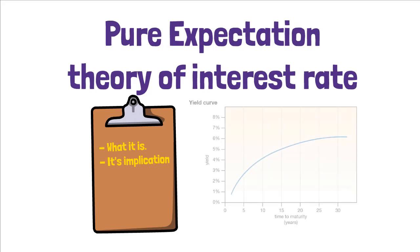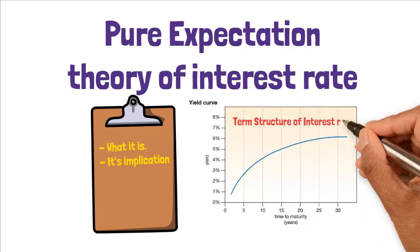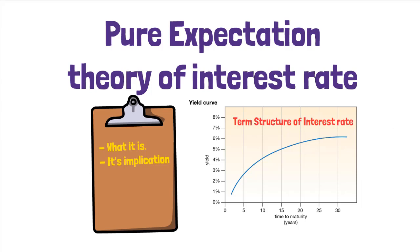To understand the pure expectation theory, we focus on the term structure of interest rates first. This is simply the relationship between bond yields and maturities. This relationship is illustrated in a yield curve like this.